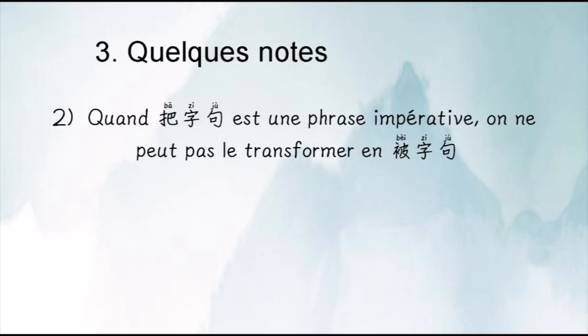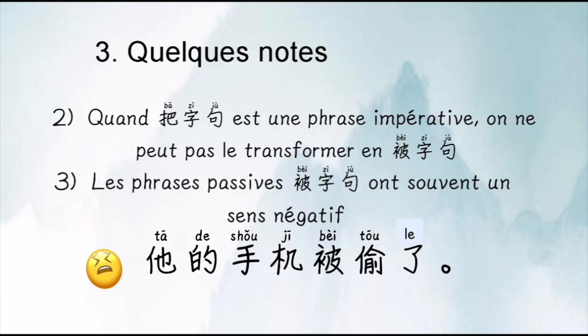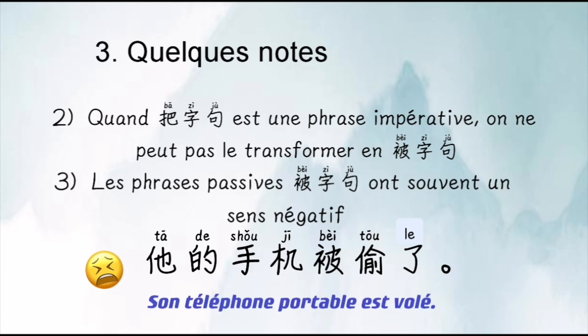Deuxième point : quand BA ZI JU est dans une phrase impérative, on ne peut pas la transformer en BEI ZI JU, en phrase passive. Et troisième point, il faut faire attention : les phrases avec BEI ZI JU ont souvent un sens un peu négatif. Exemple : son téléphone portable a été volé par quelqu'un.